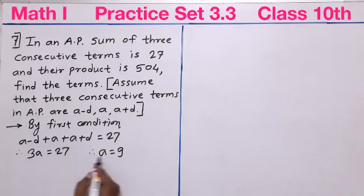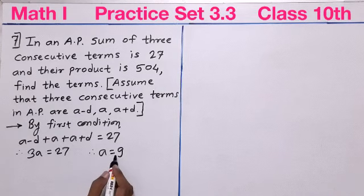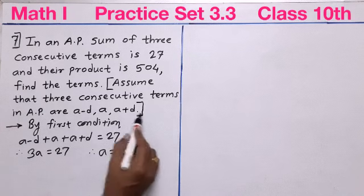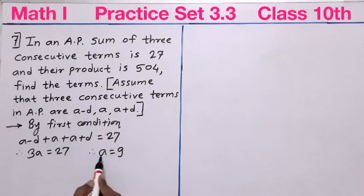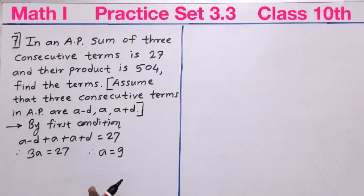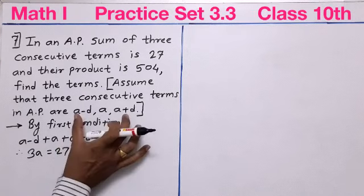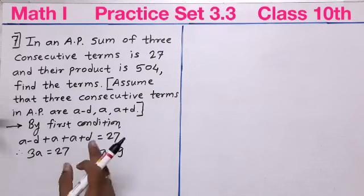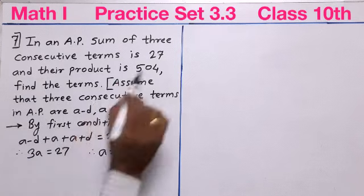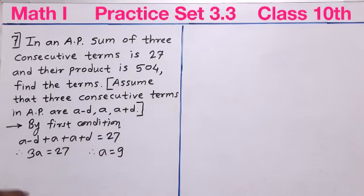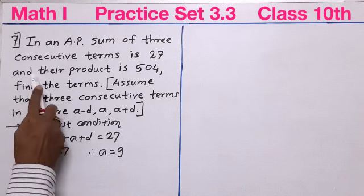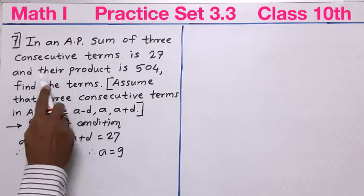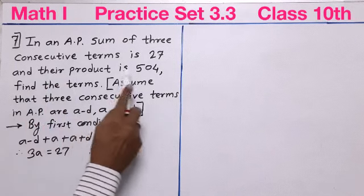This value of A is useful. The middle term is already found. But we also need D to find the other two terms, so we will use the second condition. The second condition is that the product of the three terms is 504.